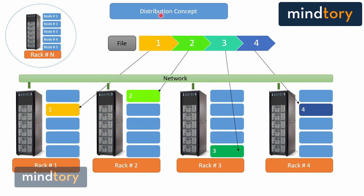The distribution concept means that a file can be distributed across multiple racks and on multiple nodes. Each rack contains multiple nodes, and each node represents a standalone machine with its own computing power, RAM, and physical storage. Each data block can be deployed on a different rack and on a different node, which is different from a traditional file management system that deals with files within the same machine.